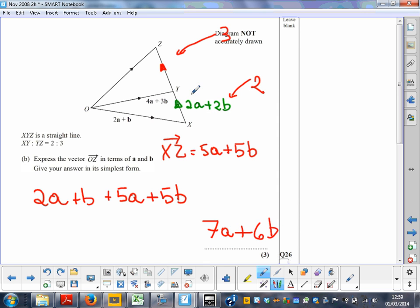Notice that it wouldn't change anything if I had done the other path, because this would have been 3a plus 3b, so if I had gone this way it would have been 7a plus 6b anyway. So that's the answer.